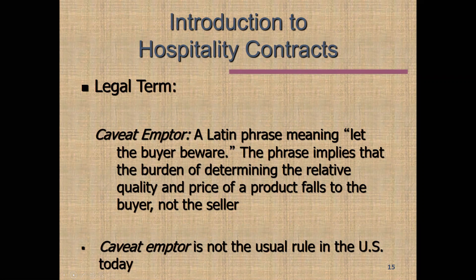We've all heard the expression 'caveat emptor' — Latin for 'let the buyer beware' — meaning the law advantages the seller and the buyer must be suspicious. That used to be the standard in some parts of the world, but it hasn't been the standard for quite a while. Under the UCC and various other laws, the buyer is pretty well protected. This makes sense because the seller is in the best position to have information: if I'm selling you a loaf of bread, I know how I made it.